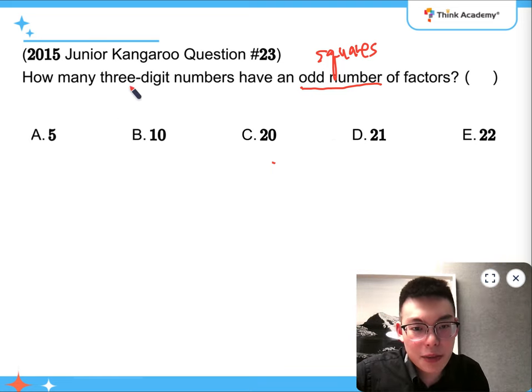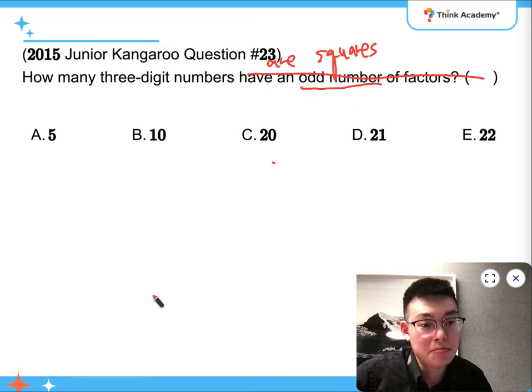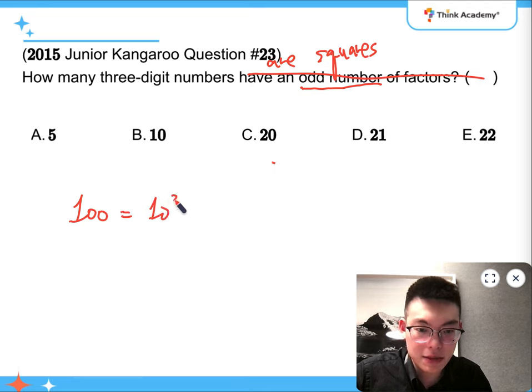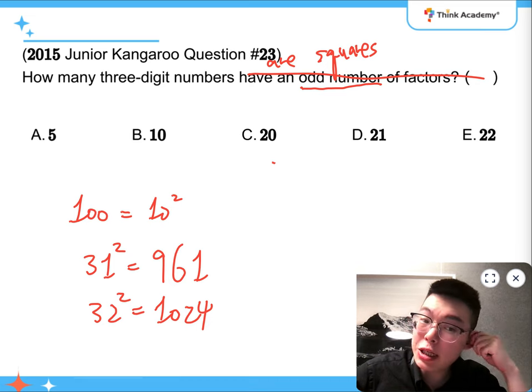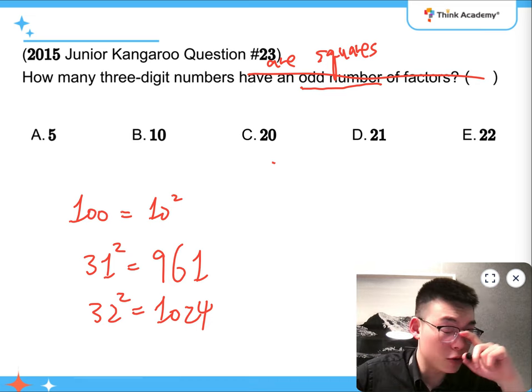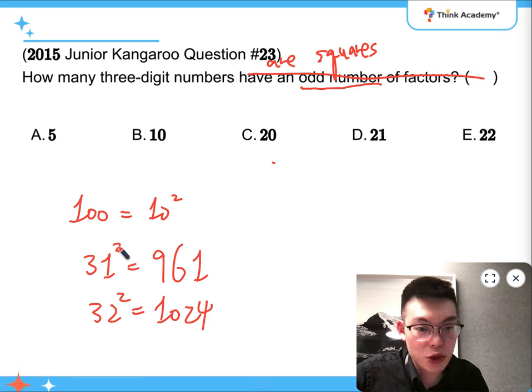Only square numbers have odd number of factors. So essentially, it's asking you how many three-digit numbers are squares. That's what the question is asking. So the smallest one, of course, is 100, which is 10 squared. And think about 1000 squared. We know that 31 squared is equal to 961, and 32 squared is equal to 1024. So if you can memorize these numbers, that would be great. But if you can't, it's fine. So it means that 31 squared works, 32 squared doesn't, because it has to be three-digit. So it doesn't work.